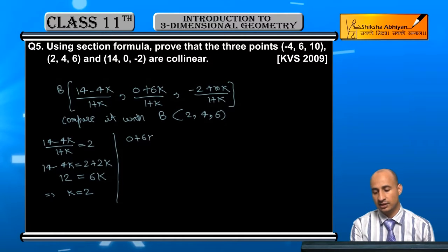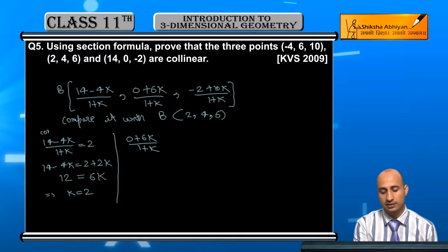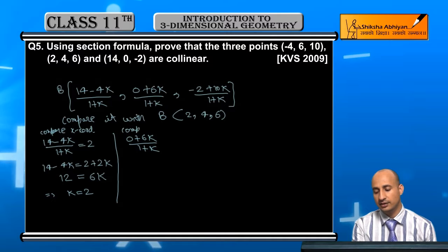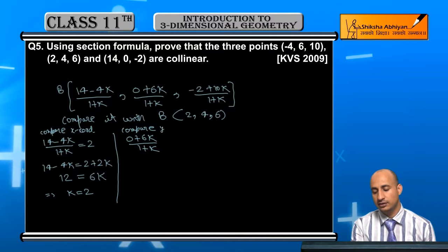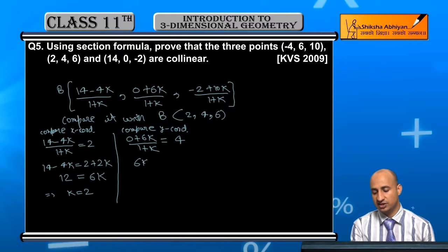0 plus 6k upon 1 plus k. I'll write it here: compare x coordinate and here compare y coordinate. This will equal to 6k is equal to 4 plus 4k.